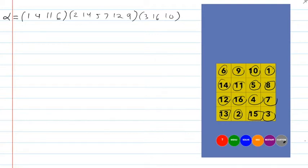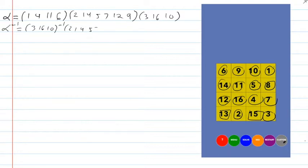Now I only have 120 different moves I'm allowed to make. But if I were able to do any permutation I want, the permutation I would do would be the inverse — because the inverse is the cycles in reverse order, all inverted. This is not one of the legal 120 moves, but I just want to take you through that.